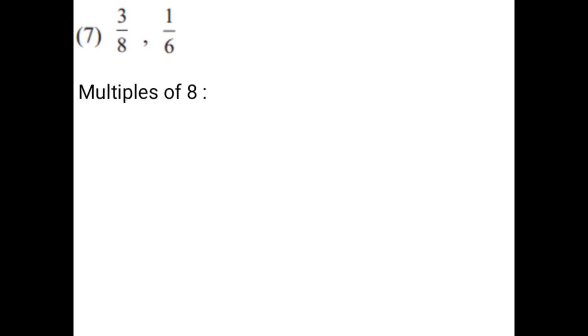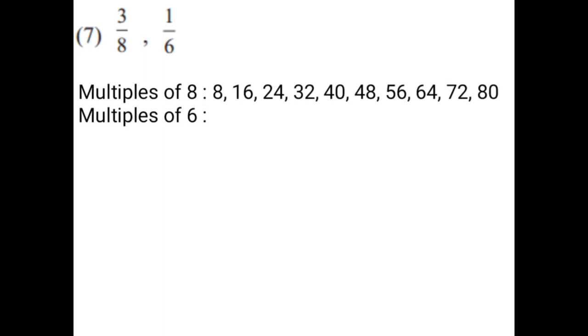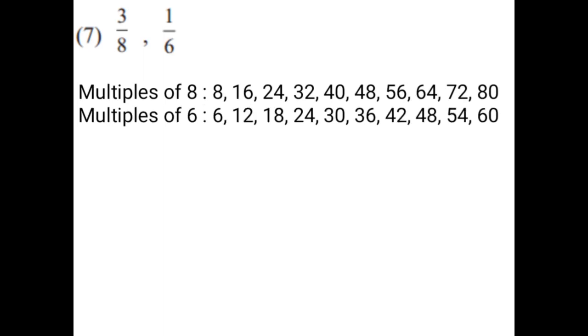3 upon 8, 1 upon 6. You have to write the multiples of both the denominators, that is 8 and 6. After writing the multiples of 8 and 6, you have to find the lowest common multiple, and then you have to make the denominators equal. Multiples of 8 and multiples of 6 — the first common multiple is 24. So the lowest common multiple of 8 and 6 is 24. You have to make the denominators equal, that is denominator 24.